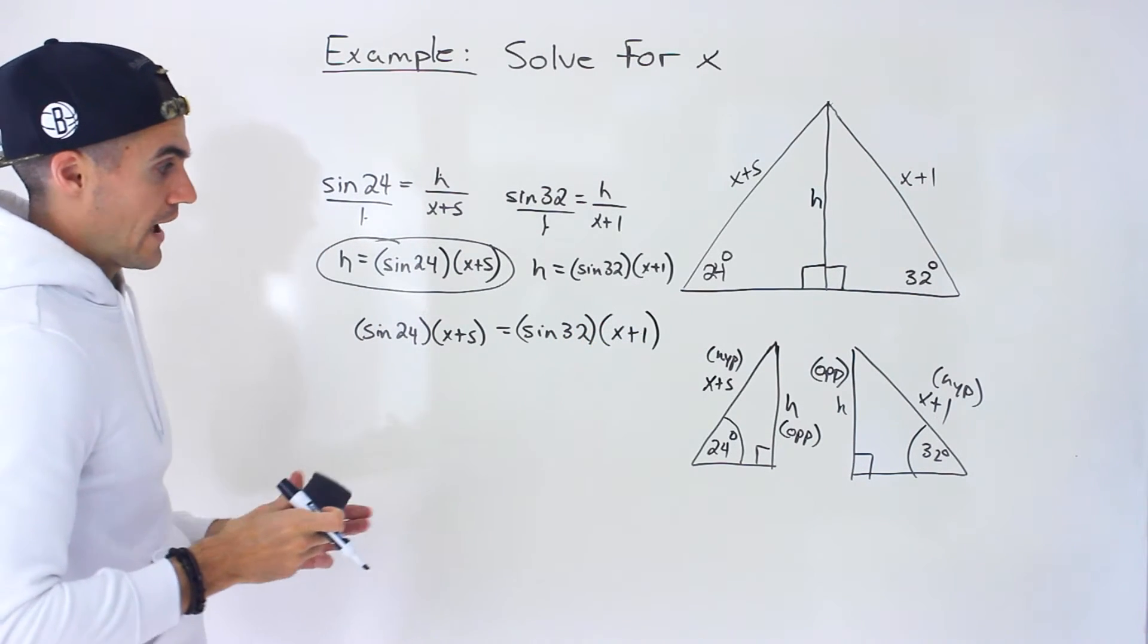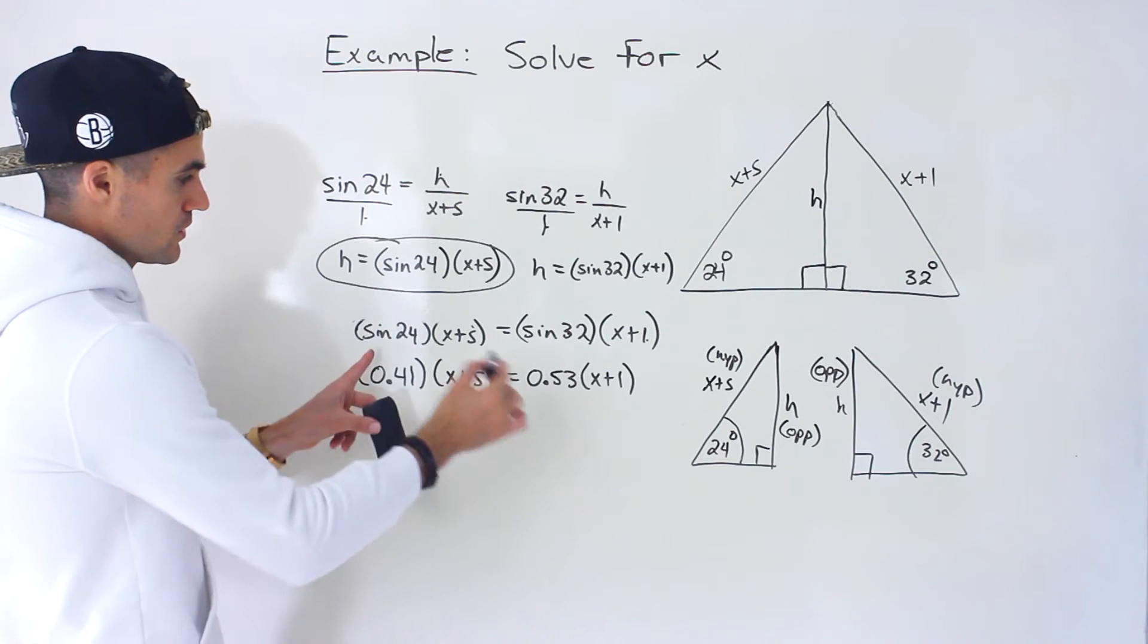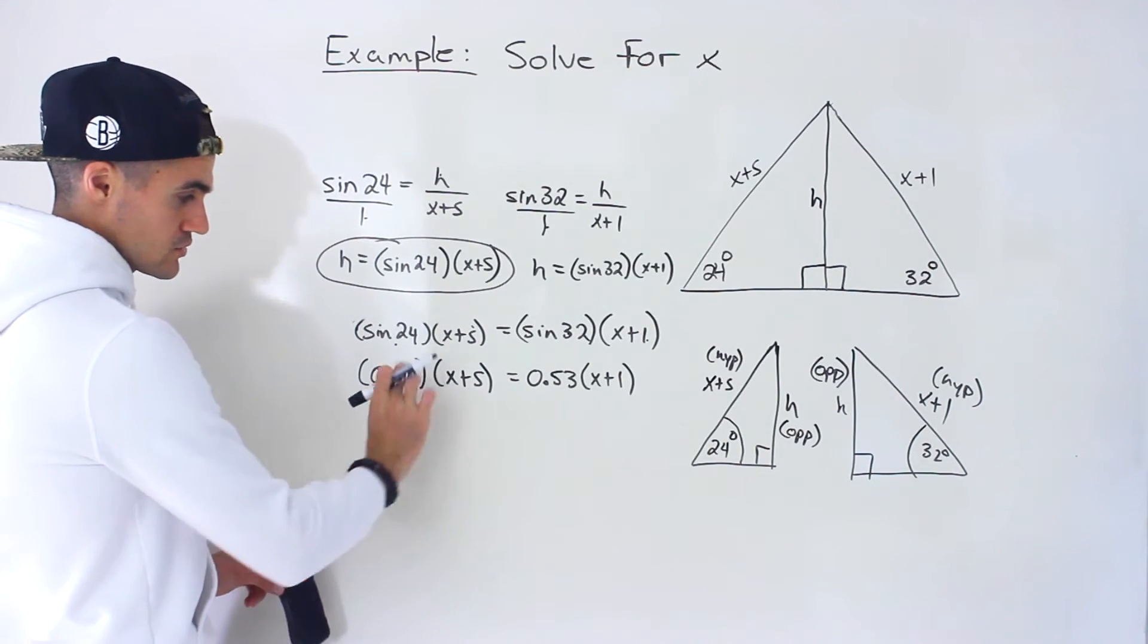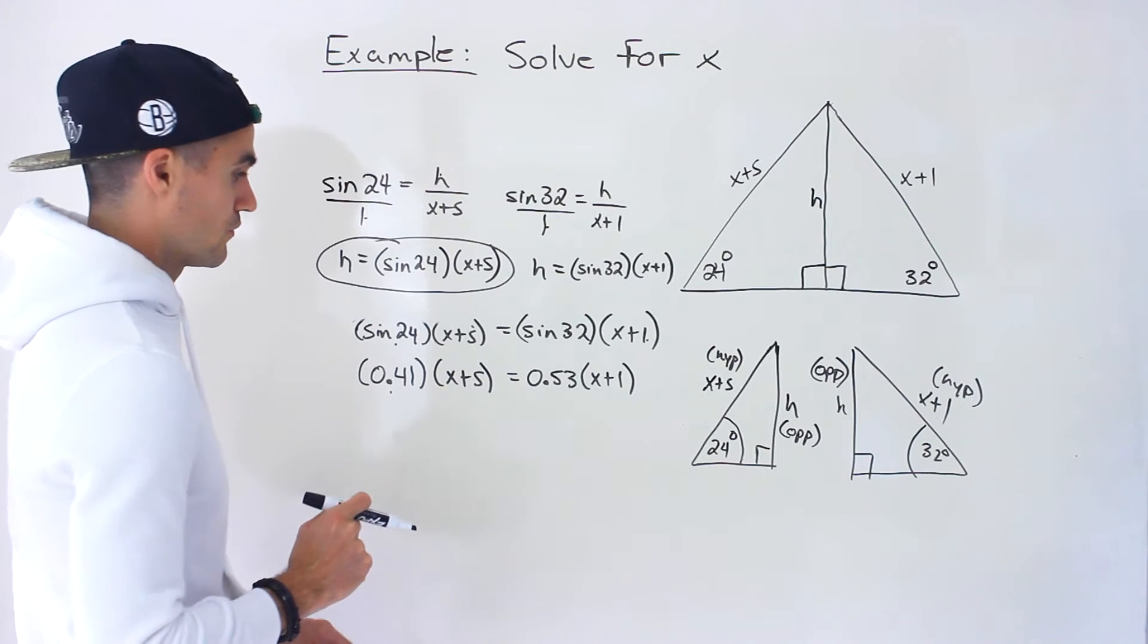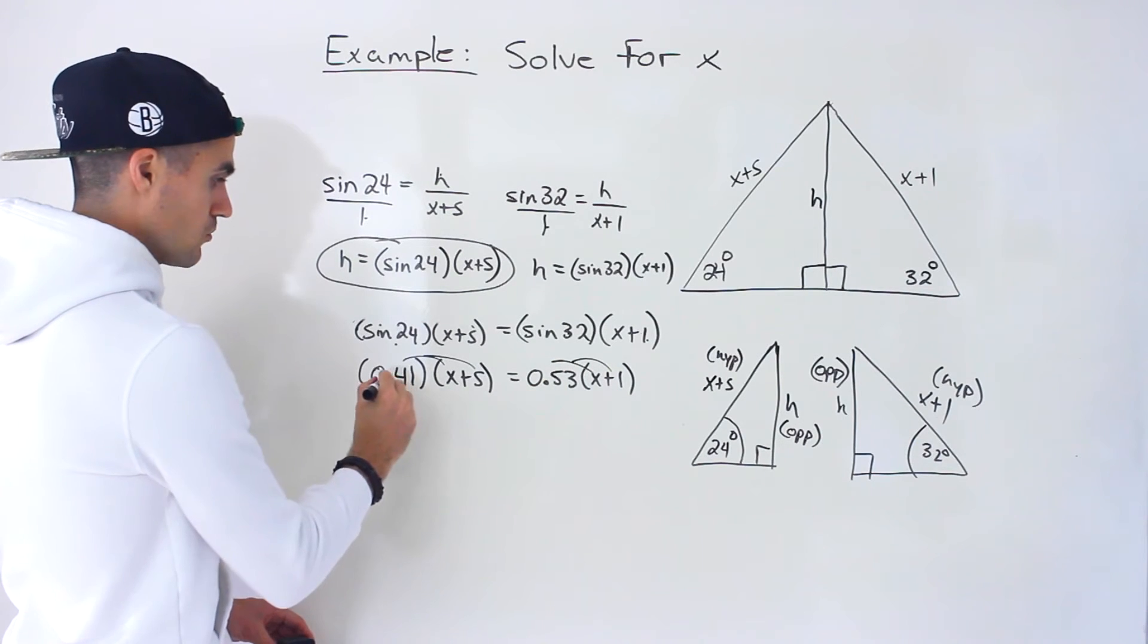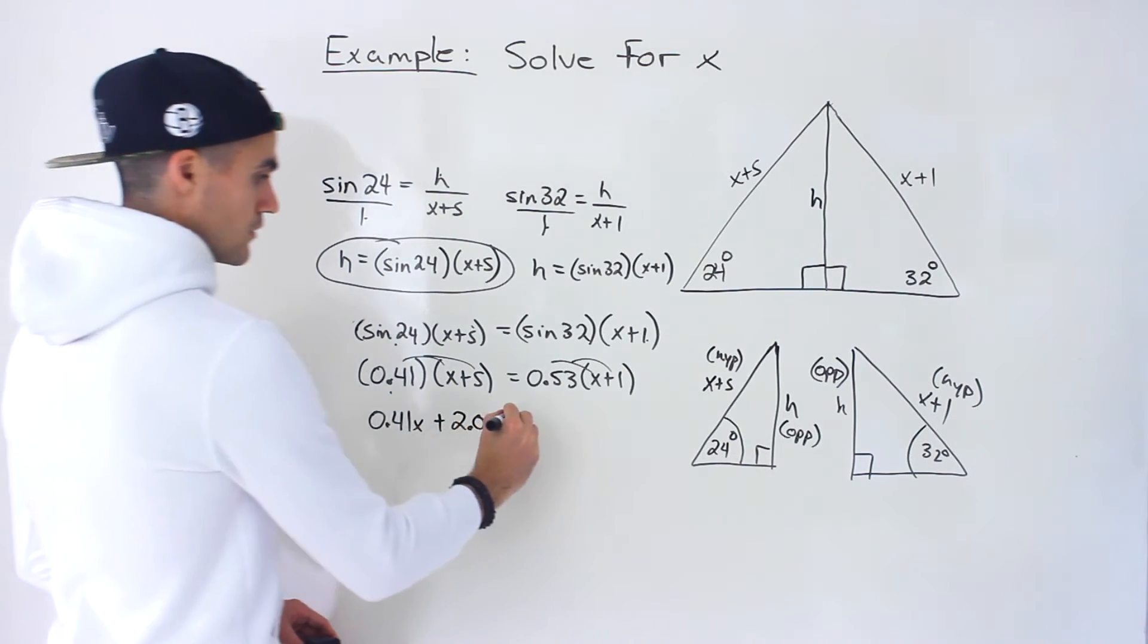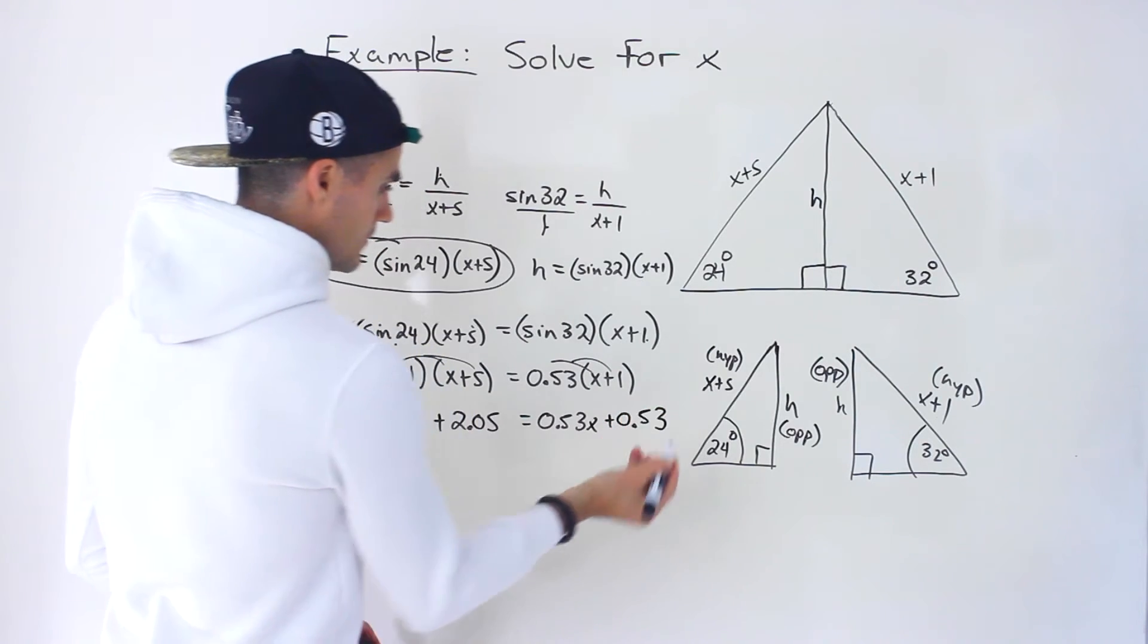Now notice we have one equation to solve with one unknown with this x value. What I'm going to do is for sine 24, I'm going to put in this decimal. If you put sine 24 in your calculator, you'd get approximately 0.41. Then sine of 32 is approximately 0.53. From here, it just becomes an equation to solve. We distribute in the bracket. So 0.41 times x gives us 0.41x. 0.41 times 5 would give us 2.05. Then over here, we'd end up with 0.53x, 0.53 times 1 would give us 0.53.